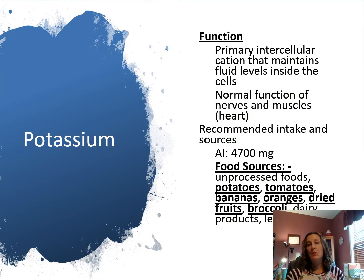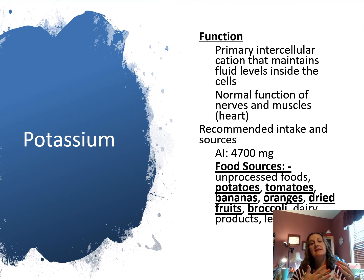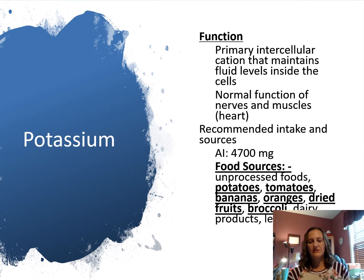Potassium is an important mineral, especially in cardiac and neurological function. It is a positively charged mineral that helps maintain fluid levels intracellular — inside the cell. Potassium-rich food sources include potatoes — white and sweet — tomatoes, bananas, oranges, dried fruits like apricots, dairy products, and legumes.